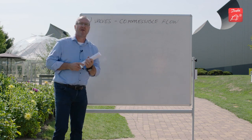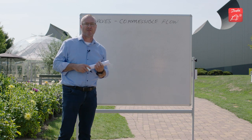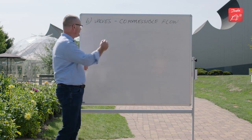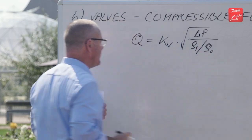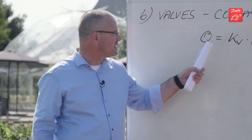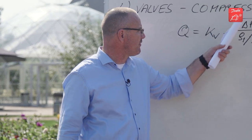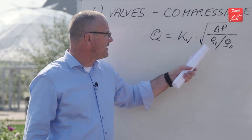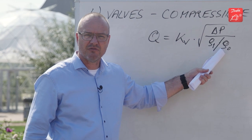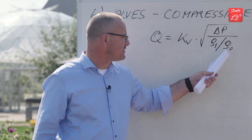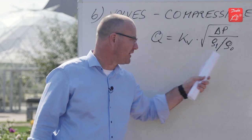Last time we covered incompressible flow in valves and developed a valve equation. The flow is equal to the flow coefficient times the square root of delta p over the density ratio, with rho zero being the reference density — the density of water at 20 degrees, equal to 1000 kilograms per cubic meter.